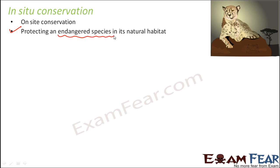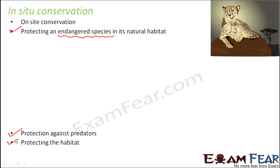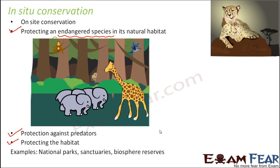We do not relocate the animals from their natural habitat. They remain there, but we protect that particular area — it is declared a protected area, and that is how the species can also be protected. The protections ensured include: protection against predators, so organisms that feed on the endangered species are not allowed in that area, and protection of the habitat so human beings cannot exploit it. Examples of in situ conservation are national parks, sanctuaries, and biosphere reserves.